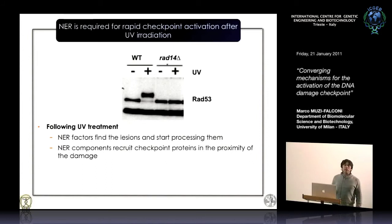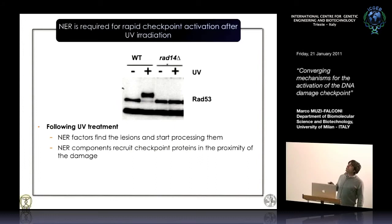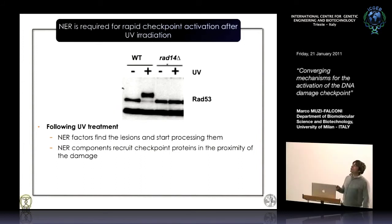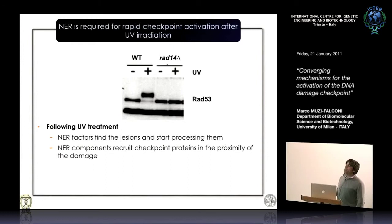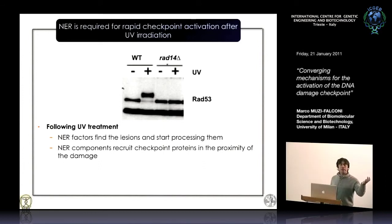This tells us that it's not the UV lesion itself that is triggering the signaling, but that nucleotide excision repair has to identify the lesion first. We also know that you need to start processing these lesions — it's not enough to recognize them, you have to start processing them — in order to activate the apical kinase and recruit checkpoint factors. Nucleotide excision repair factors find the lesion and start processing them, and we know these factors recruit checkpoint proteins in proximity of the damage through physical interactions. So NER increases the local concentration of checkpoint factors, and then processing triggers the signaling cascade.